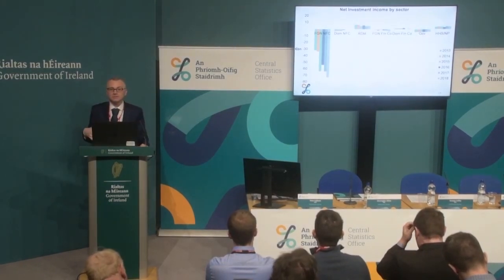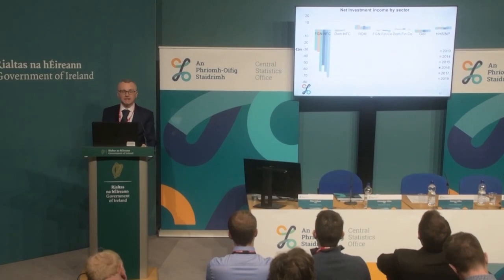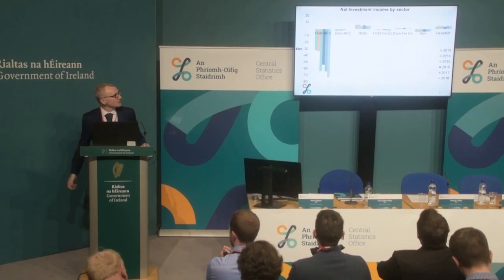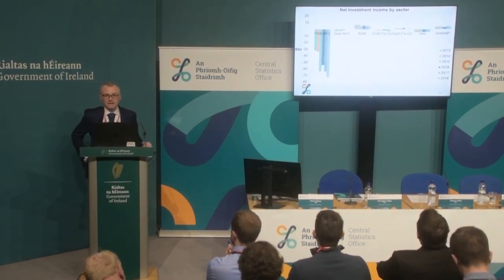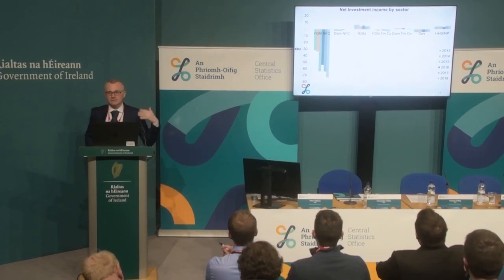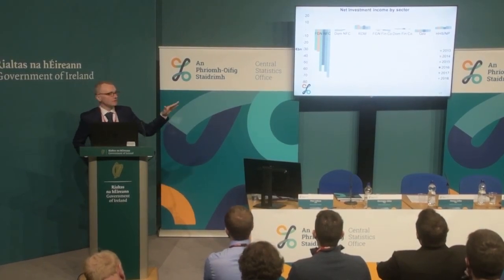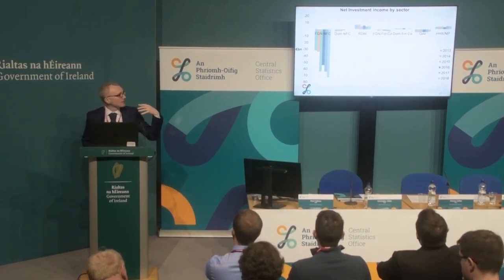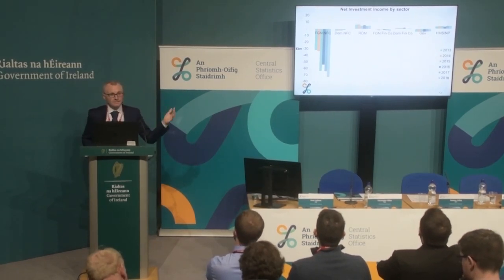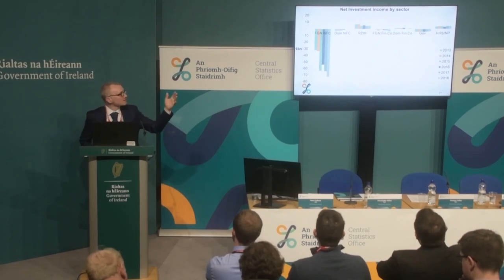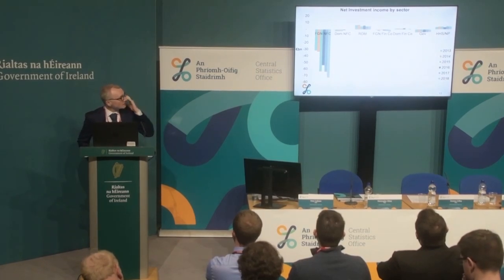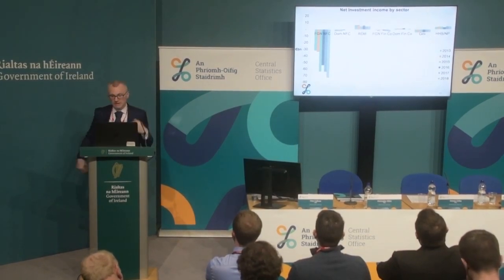Moving down beyond operating surplus, the next part of the account is the investment income — interest, dividends, and so on. For Ireland as a whole, it's dominated by the outflows of the foreign non-financials: they're paying their profits as dividends and reinvested earnings out. The redomiciled PLCs are receiving lots of income from their subsidiaries. The financial corporations have lots of gross flows but they largely net out. Government is paying its debt. Households, in general, have an income from their pension funds particularly.